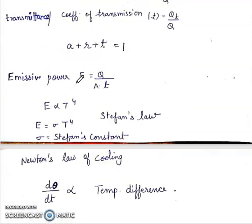Emissive power E is equal to heat per unit area per unit time, Q upon At. And according to Stefan's law, E is proportional to temperature raised to power 4. E is equal to sigma T4, where sigma is Stefan's constant.